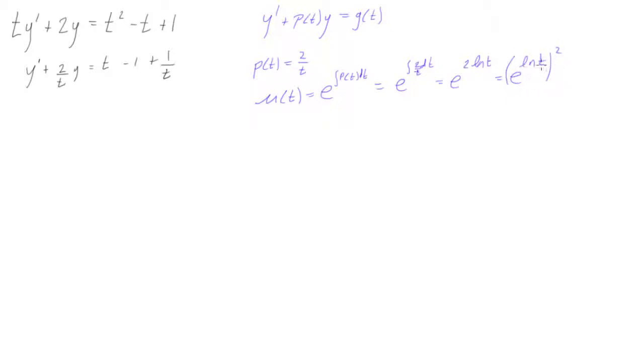And then we can say, well, e to the ln of whatever is just whatever, and that's going to be that whatever we have is t. It's kind of the unofficial way to say that. So we can say that this is all equal to t squared. Cool, so let's write this here. We have, let's try writing that again, μ(t), so our integrating factor is equal to t squared.